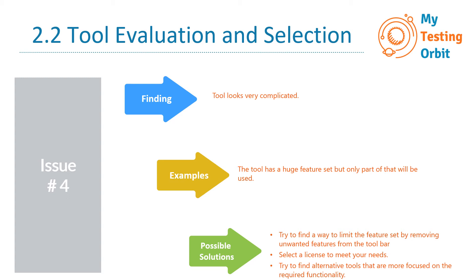The second solution is to select a license that meets your needs. When opting for a license, there are usually different packages — basic, premium, or ultimate — at different prices. Instead of going for the expensive ones with lots of features, first look at the basic package. If it gives you everything you need right now, that's sufficient. As your team and organization grow, you can always upgrade to a higher package later.